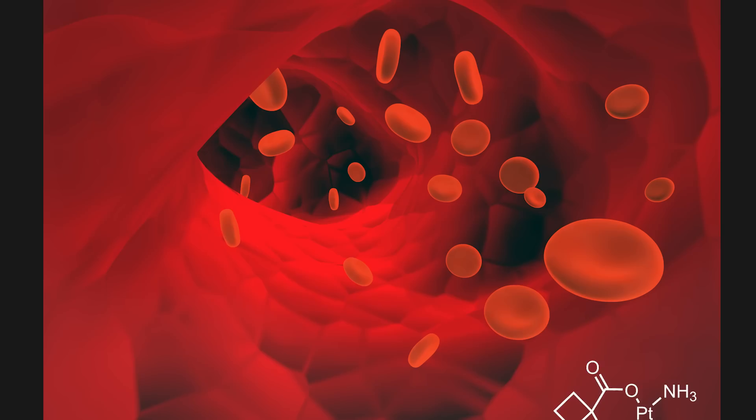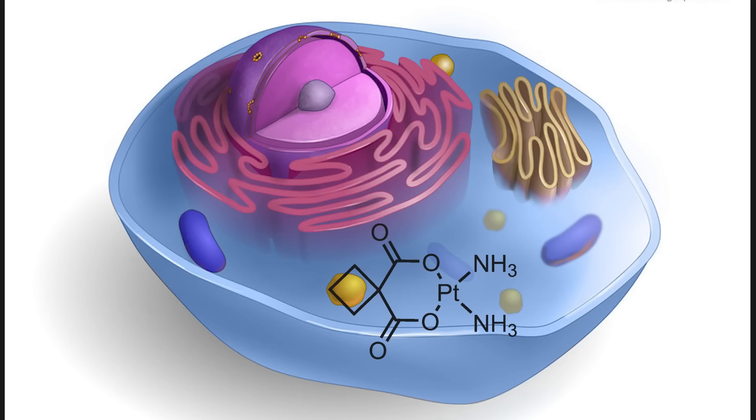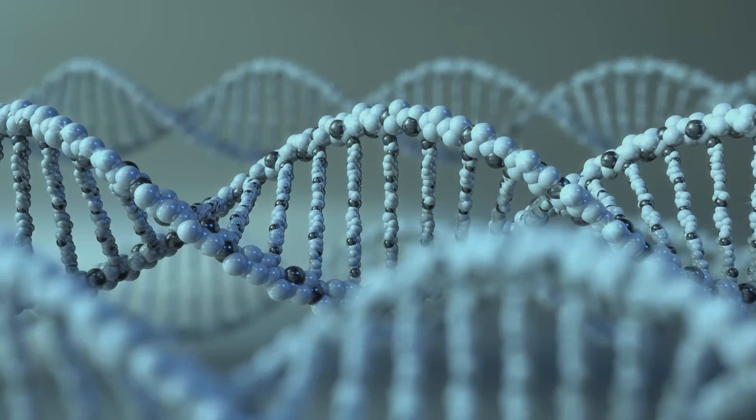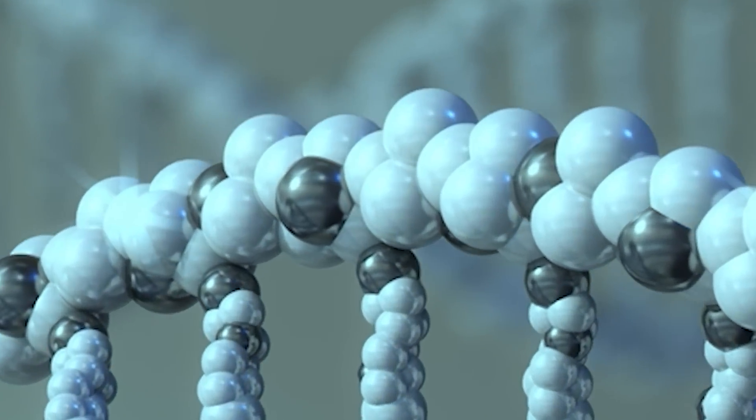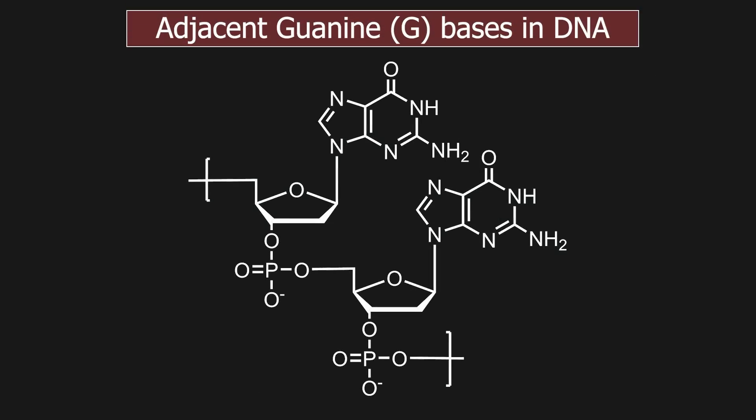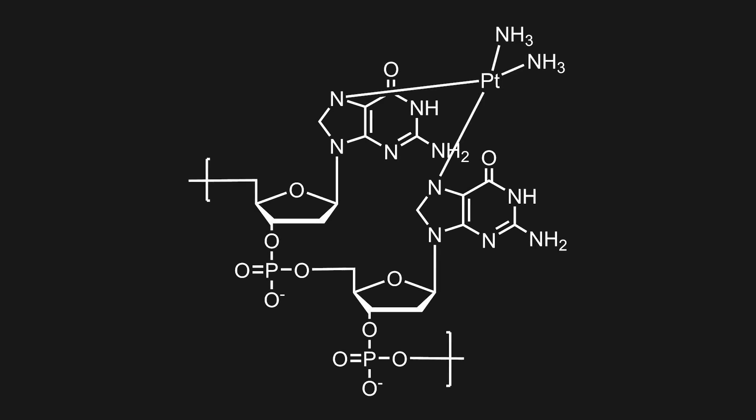So after the drug has been injected, it will enter into a cell and become oxidized to its active form, losing the cyclobutane dicarboxylate ligand. In the cell, it will find its way to the DNA and encounter a place in the DNA where two adjacent guanine bases are present. In this position, it will react and cause an intrastrand crosslink between the two guanine bases.